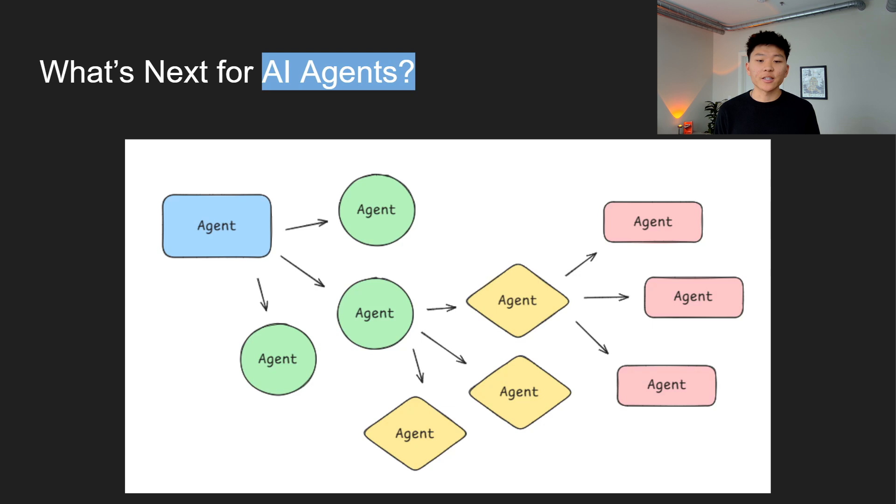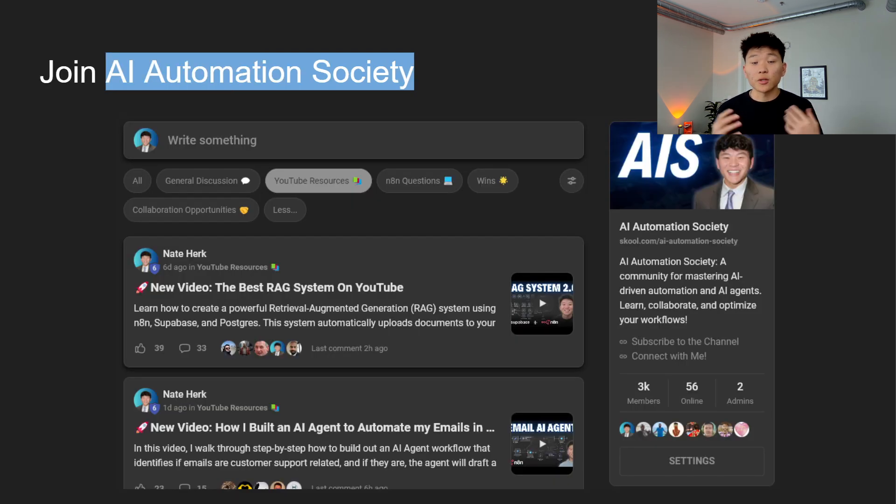And then finally, more integration into everyday tools. So this is already happening, but agents are going to be embedded more often into tools we use every day, like our CRMs, our email platforms, and project management systems, stuff like that. It's just going to become super common. So the takeaway here is that AI agents are not just the future, they're the present. So the sooner you start learning, experimenting, and building, the better you're positioning yourself to take advantage of this paradigm shift in the future.